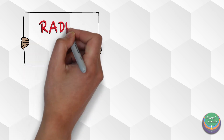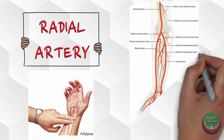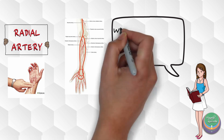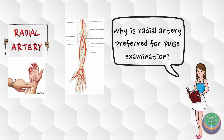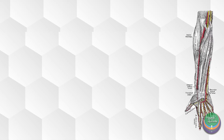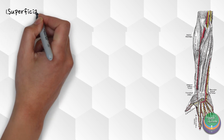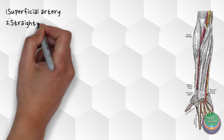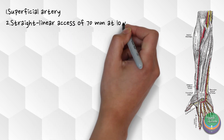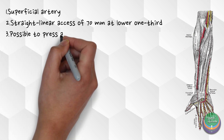The radial artery is one of the major arteries that supply the forearm. Many of you might have a very obvious question: why is the radial artery most commonly used for pulse examination all over the world? It is one of the most superficial arteries in the body, with a straight linear access of approximately 70 mm at the lower one-third subcutaneously. It runs above the flat surface of the radius bone, making it possible to press against a hard surface.